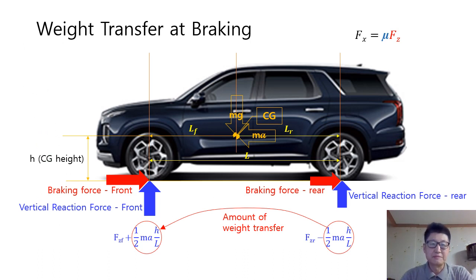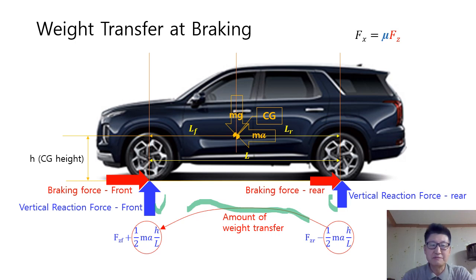Let's review the previous video briefly. When we apply the braking force, weight transfer happens to the front. Therefore, the front vertical force gets heavier and the rear vertical force gets lighter. A brake force is the horizontal force proportional to the vertical reaction force. The proportional constant is the tire friction coefficient, mu.